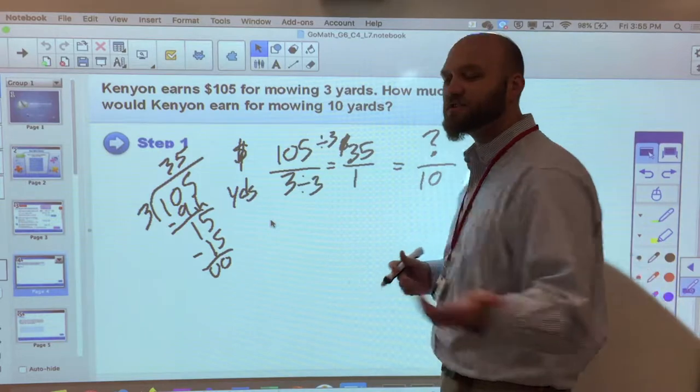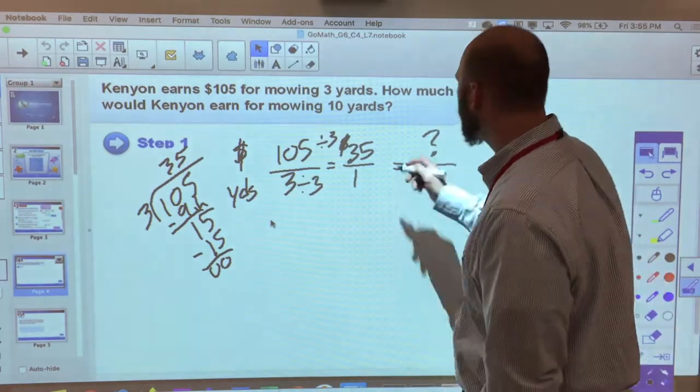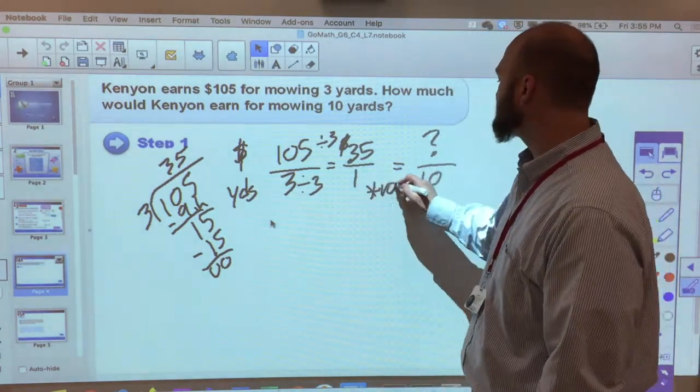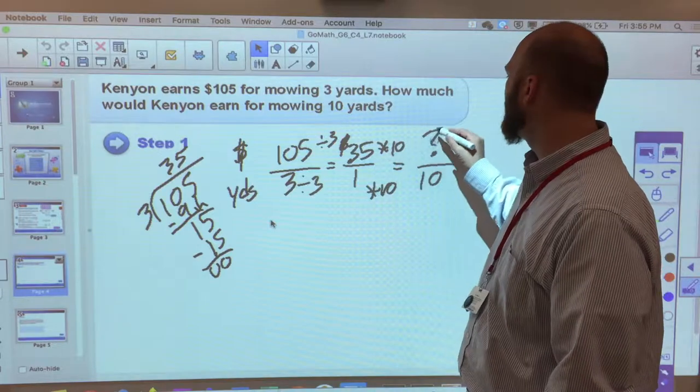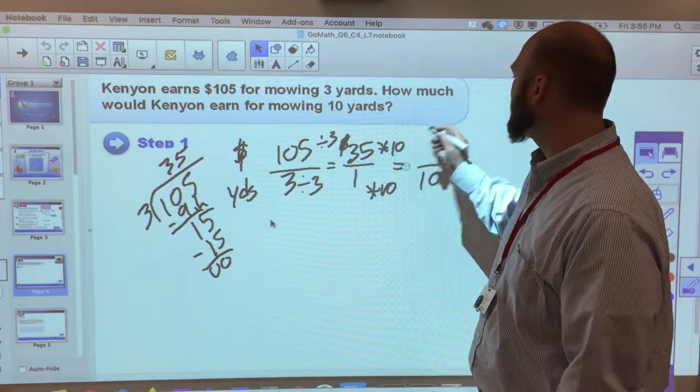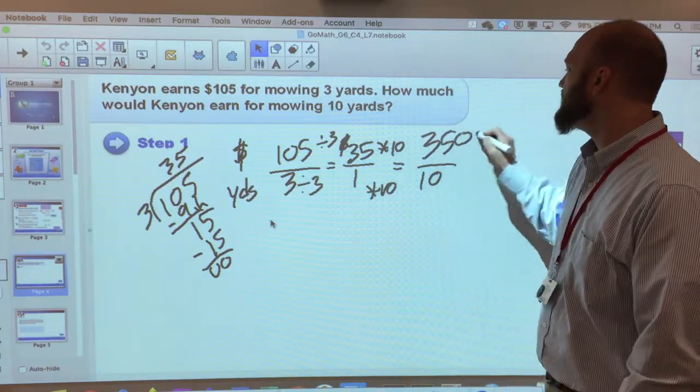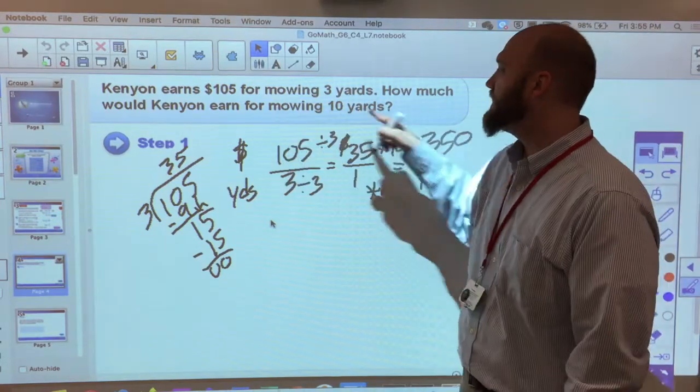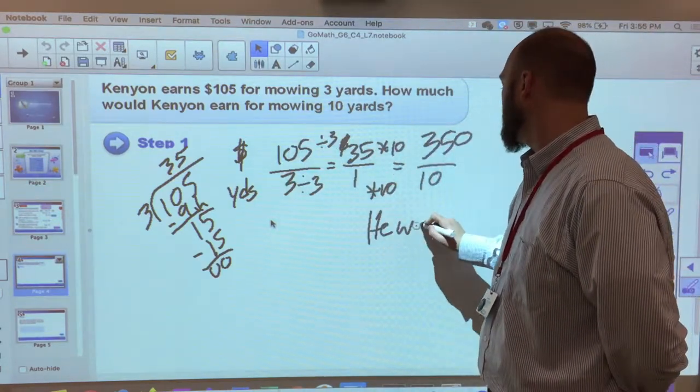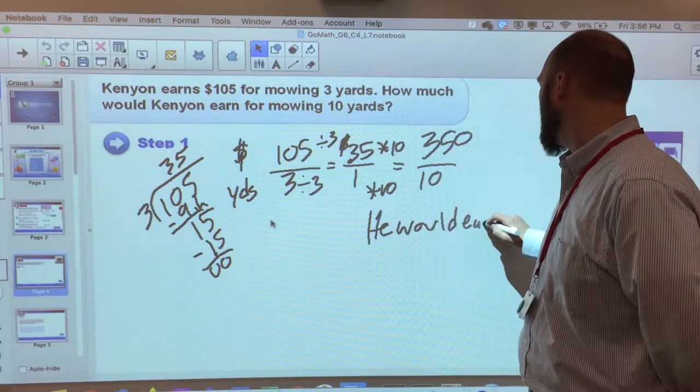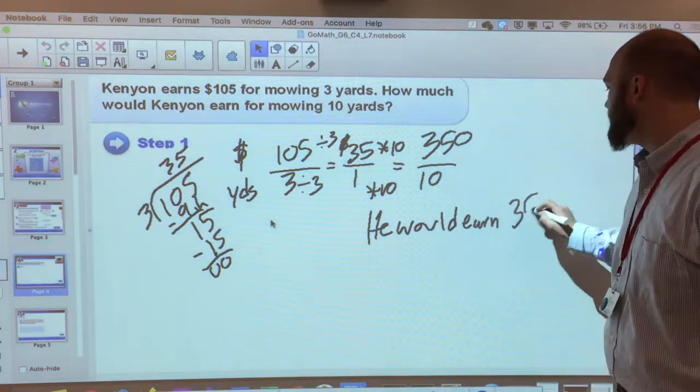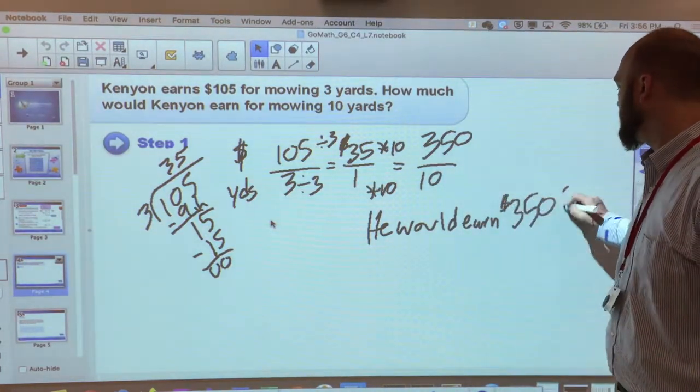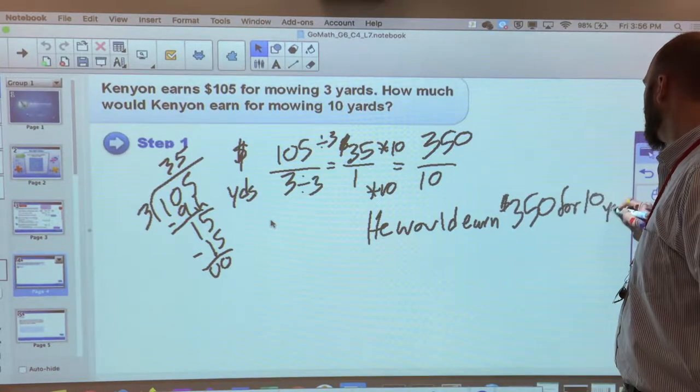So now I know if he makes 105 dollars for three yards, he makes 35 dollars for one yard. And I go from one to ten and multiply by ten. And 35 times ten is gonna be 350. So how much would he earn for mowing ten yards? He would earn $350 for ten yards.